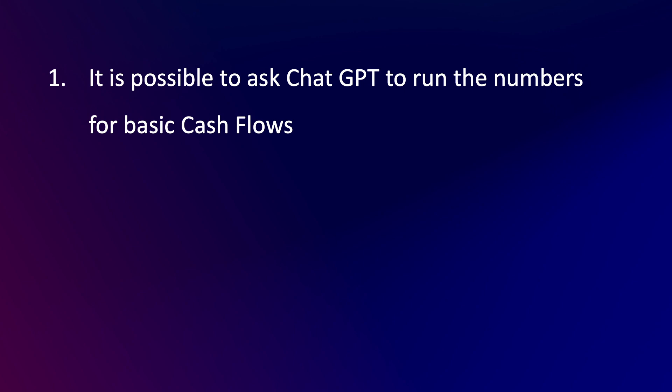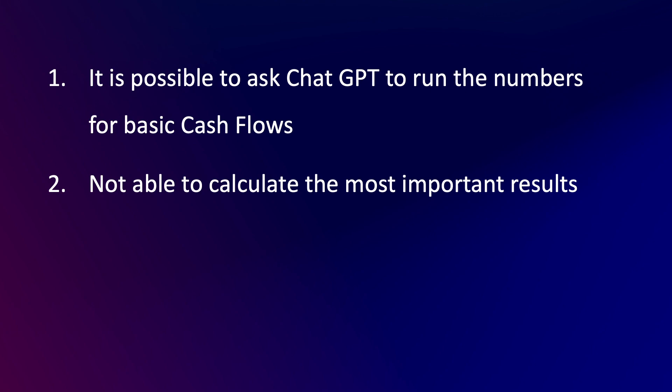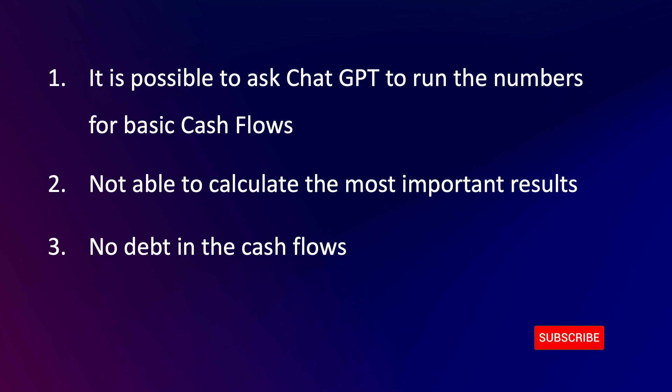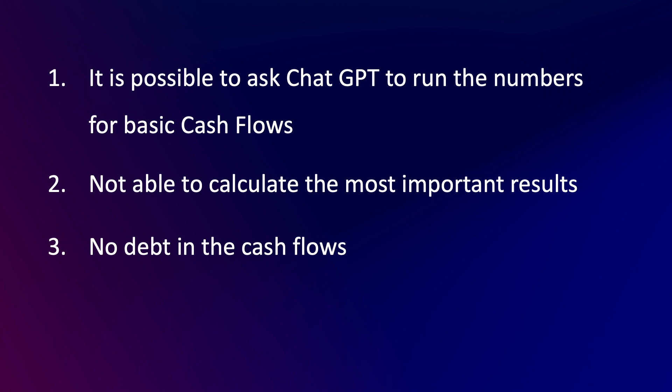So what are the takeaways from this exercise? First, ChatGPT can do some sort of analysis and at least print a cash flow table. Second, it is not able to calculate the most important outputs — the NPV and IRR. Third, when you increase the complexity with the inclusion of debt financing, ChatGPT just gets lost. As a result, if you think you can rely on ChatGPT to make cash flow analysis for renewable energy projects, I would reconsider those assumptions. That's it for today — please subscribe to the channel and give a thumbs up if you liked the video. See you in the next one.